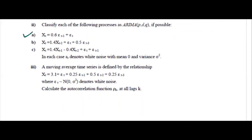Part 1: Xt is given as 0.6 Et minus 1 plus Et. When you see this, you are sure there is no past AR dependence component — Xt in terms of Xt — so the AR part is absent. Only MA part is there. So if you look at it once, it looks like MA1.